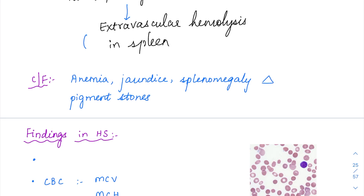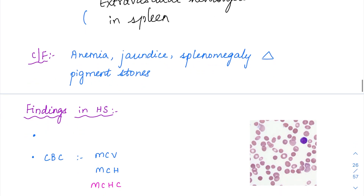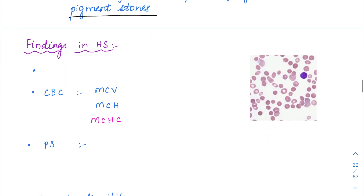Anemia and jaundice are common for any hemolytic anemia. Apart from that, there is splenomegaly because it is extravascular hemolysis — though it is not specific for HS, it is seen in HS as well, and the same triad is seen in sickle cell anemia also. There is bilirubinemia, and whenever unconjugated bilirubin is in excess it is going to form pigment stones.